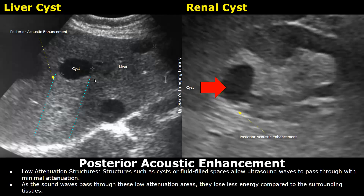Fluid-filled structures such as cysts are low-attenuating structures, which means ultrasound waves do not lose much energy when they pass through them. Cysts, a filled urinary bladder, gallbladder, and blood vessels are examples of low-attenuating structures. On ultrasound, these structures appear anechoic, or black.